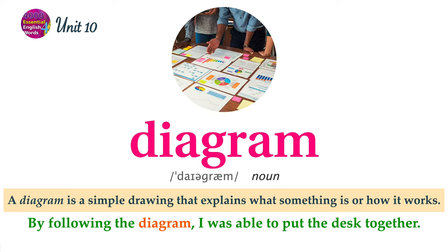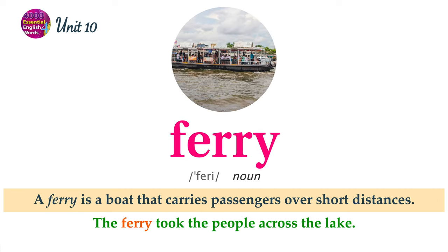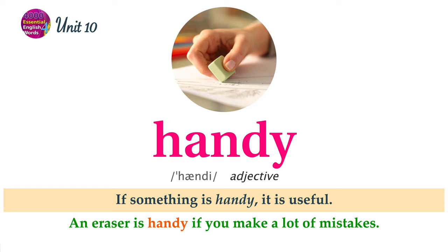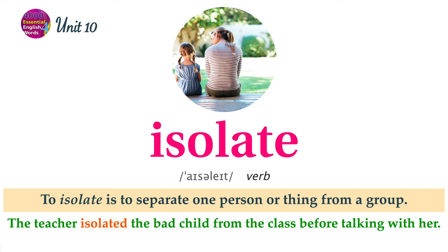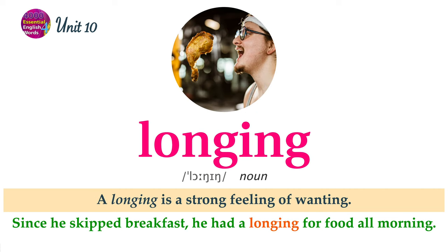A diagram is a simple drawing that explains what something is or how it works. By following the diagram, I was able to put the desk together. A ferry is a boat that carries passengers over short distances. The ferry took the people across the lake. If something is handy, it is useful. An eraser is handy if you make a lot of mistakes. To isolate is to separate one person or thing from a group. The teacher isolated the bad child from the class before talking with her. A longing is a strong feeling of wanting. Since he skipped breakfast, he had a longing for food all morning.